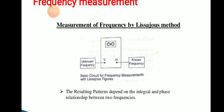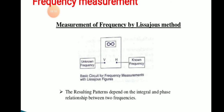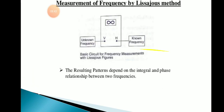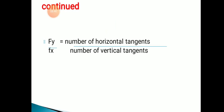Next we will move on to frequency measurement using the Lissajous pattern. You can apply two frequencies — one for the vertical and another for the horizontal channel. The CRO is switched to XY mode. The unknown frequency signal is applied to the vertical deflection plates (channel Y), and a standard known variable frequency signal is applied to the horizontal deflection plates (channel X). The formula for frequency ratio is: Fy divided by Fx equals number of horizontal tangents divided by number of vertical tangents.